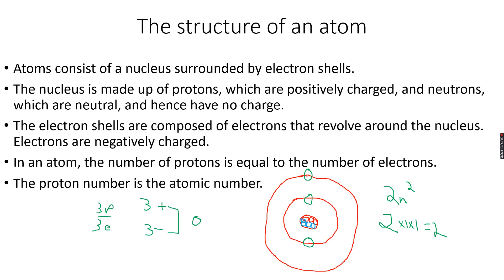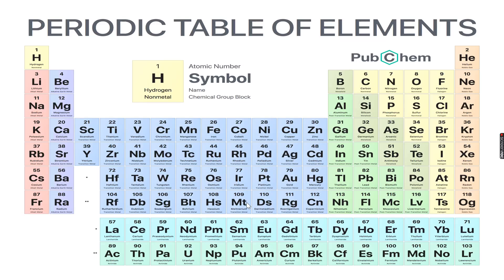As the proton number increases, the atomic number increases. This is the periodic table of elements. The numbers you can see on top are called the atomic numbers, or the proton numbers, because the atomic number is the same as the proton number. So hydrogen is one, helium is two, lithium three, beryllium four, and it keeps going. We will discuss the features of the periodic table later.